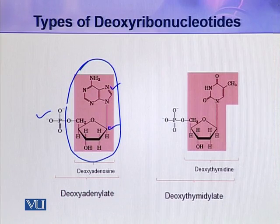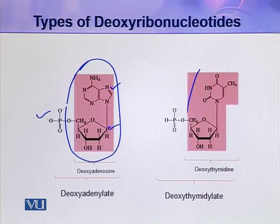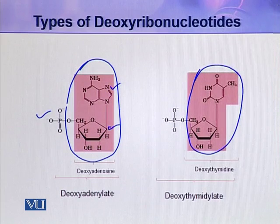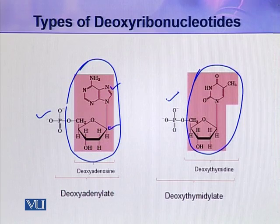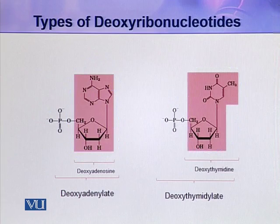In this next picture, the colored portion again shows a nucleoside. In this nucleoside, the nitrogenous base is thymine, so this nucleoside is called deoxythymidine. If this phosphoric acid is also included in the molecule, it becomes a nucleotide, and this nucleotide is called deoxythymidylate. So these are two types of deoxyribonucleotides.